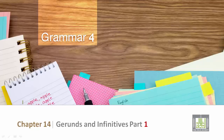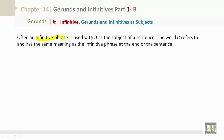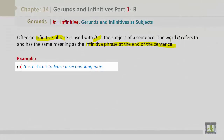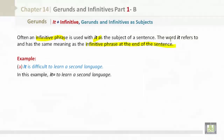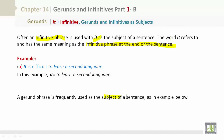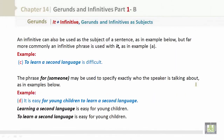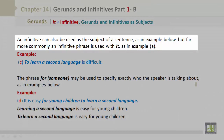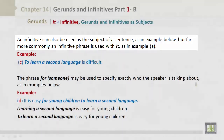It plus infinitive. Gerunds and infinitives as subjects: an infinitive phrase is often used with 'it' as the subject of the sentence. The word 'it' refers to and has the same meaning as the infinitive phrase at the end of the sentence. For example: 'It is difficult to learn a second language' — here 'it' equals 'to learn a second language.' A gerund phrase is also frequently used as the subject: 'Learning a second language is difficult.' An infinitive can also be used as the subject: 'To learn a second language is difficult,' but far more commonly an infinitive phrase is used with 'it.'